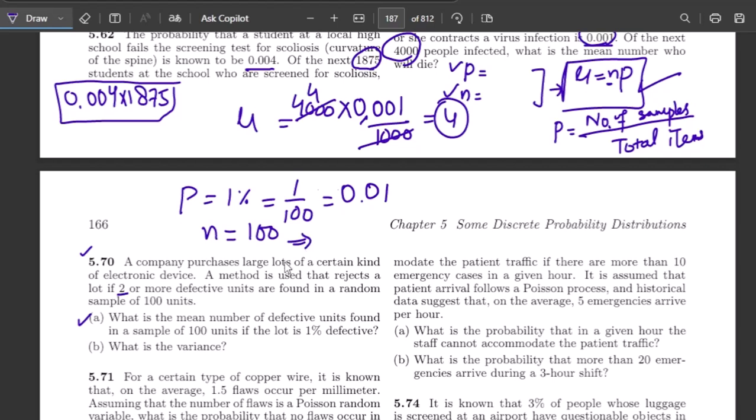So μ is equal to np, n is 100, this is 0.01. So multiplying 100 with 1 by 100 it will be 1. Similarly, the variance of it in the case of the Poisson distribution, mean is almost equal to the sigma square. So therefore the value of the variance will remain the same.